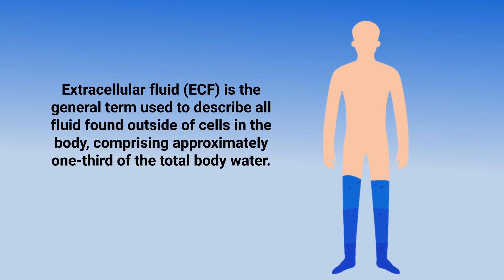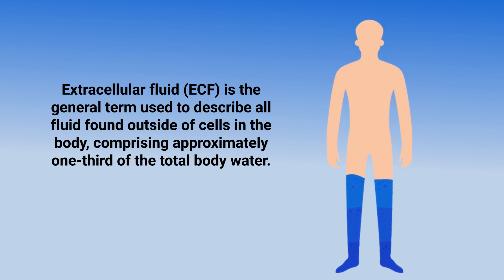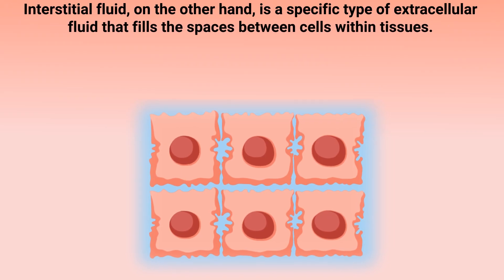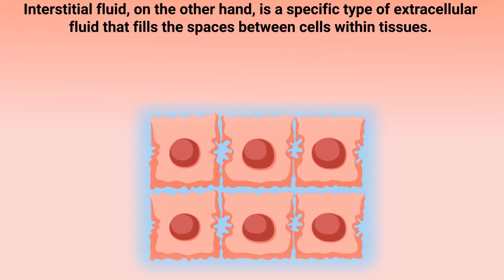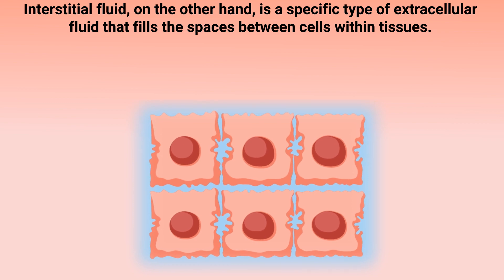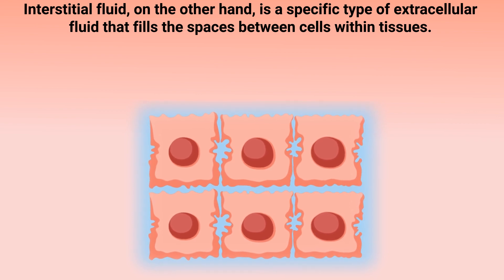Extracellular fluid comprises approximately one-third of the total body water. Interstitial fluid, on the other hand, is a specific type of extracellular fluid that fills the spaces between cells within tissues.